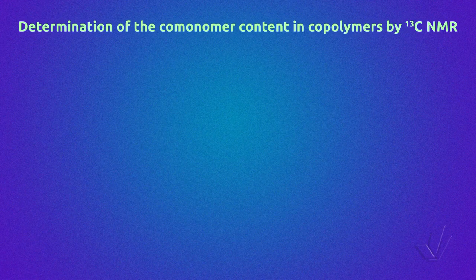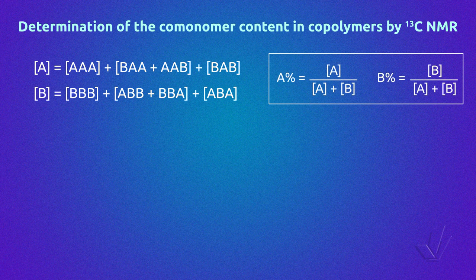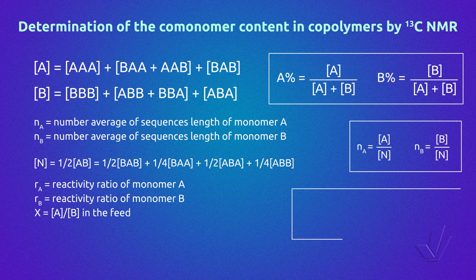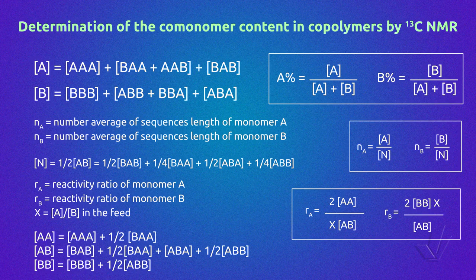The determination of the comonomers contained in copolymers by carbon-13 NMR is also obtained from triad resolution. Being two monomers A and B, the amount of monomer A is given by the triads centred in A and the amount of monomer B by the triads centred in B. The percentage of each monomer is given by the molar fraction of each monomer multiplied by 100. This slide also summarizes in a more general way the number average sequence length and reactivity ratios of each monomer, and the equations relating the monomers with their triads.